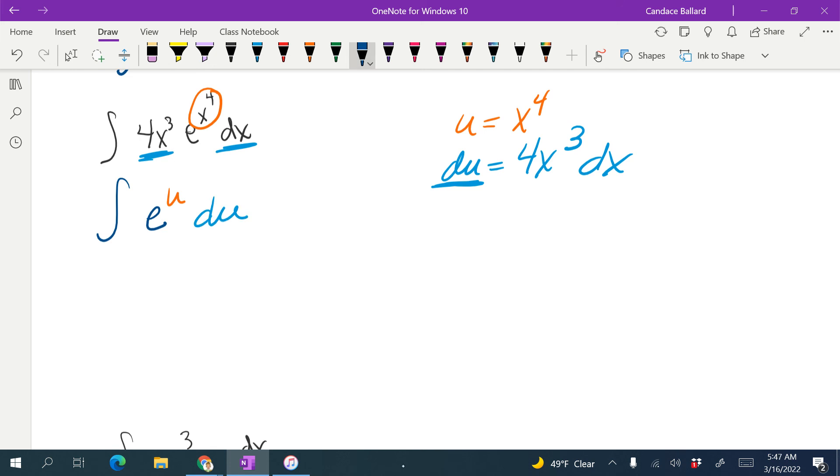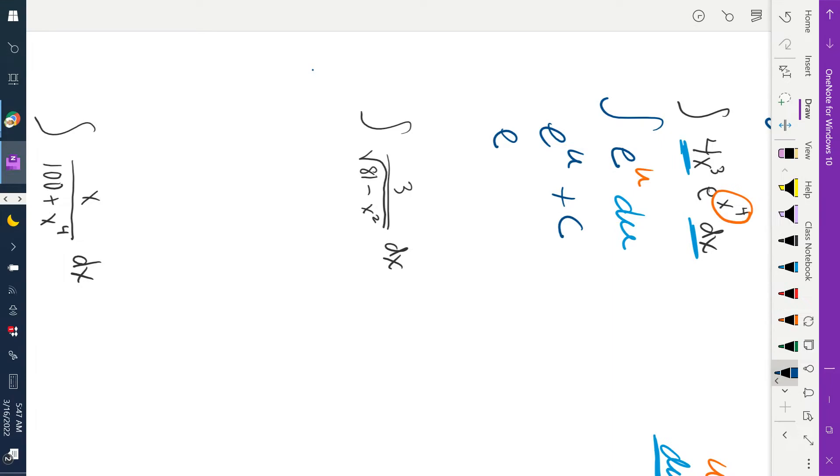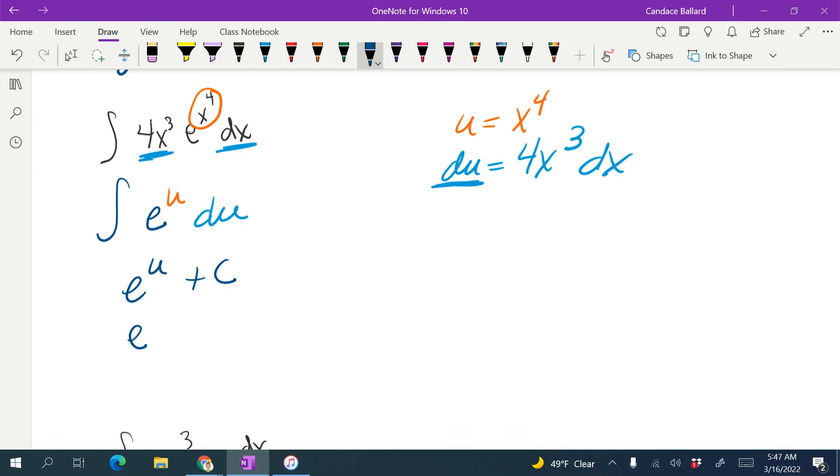When we integrate e to the u, we get e to the u plus c for the indefinite integral, and I'm going to substitute my u back in, so I'm substituting back in x to the 4th, and then plus c.